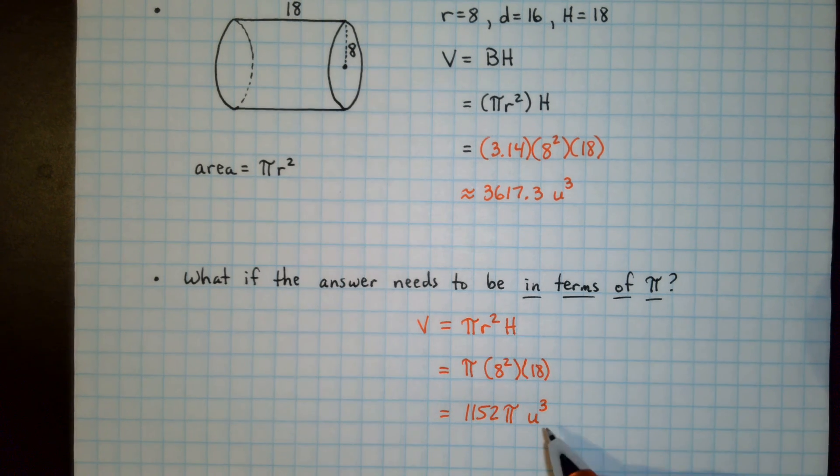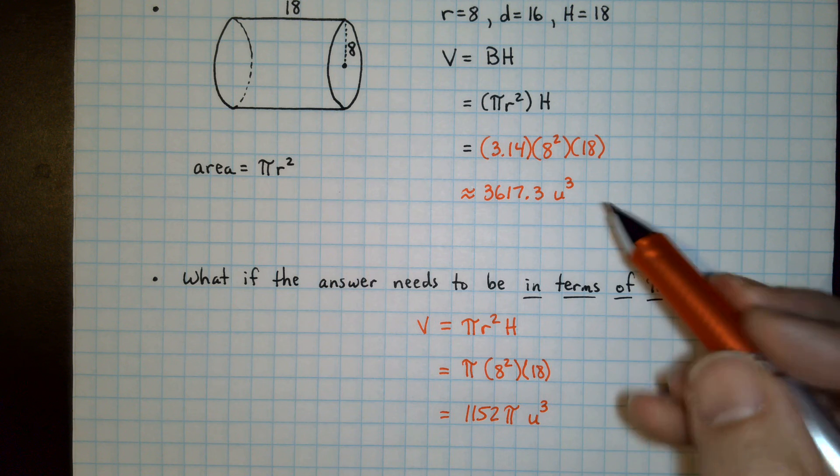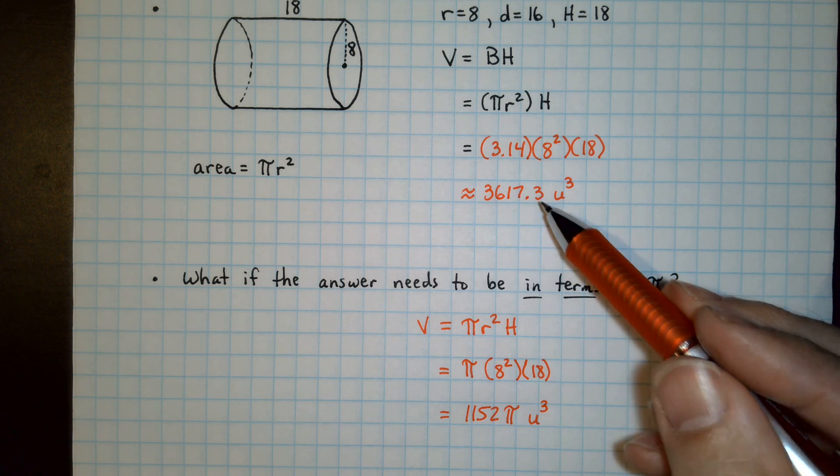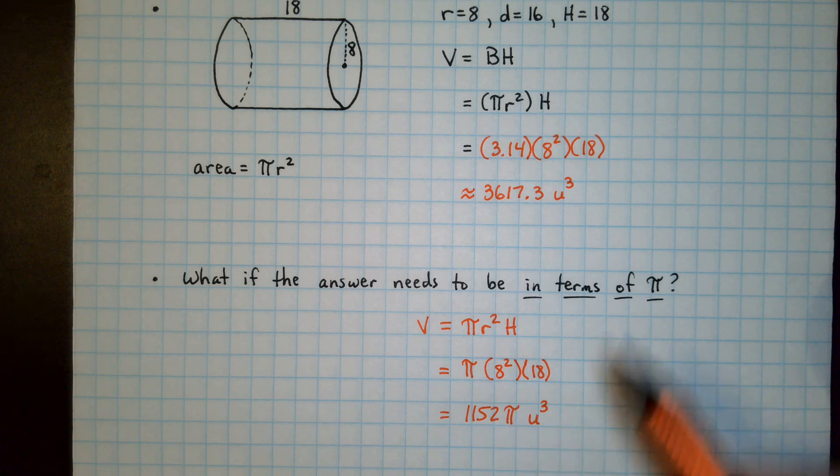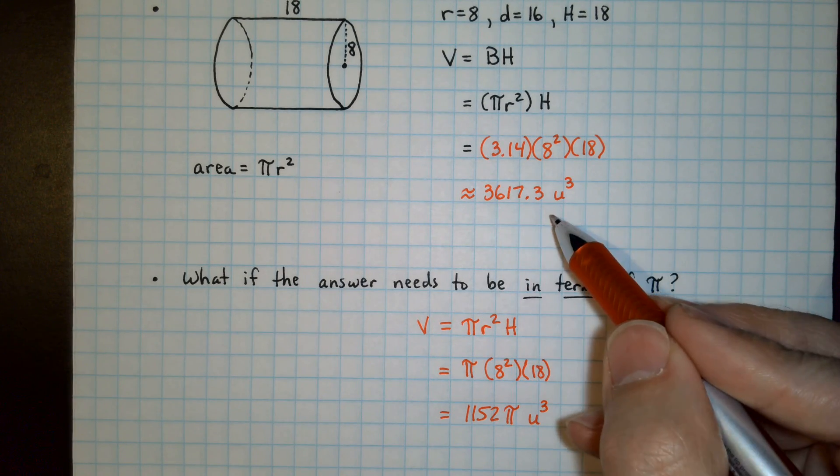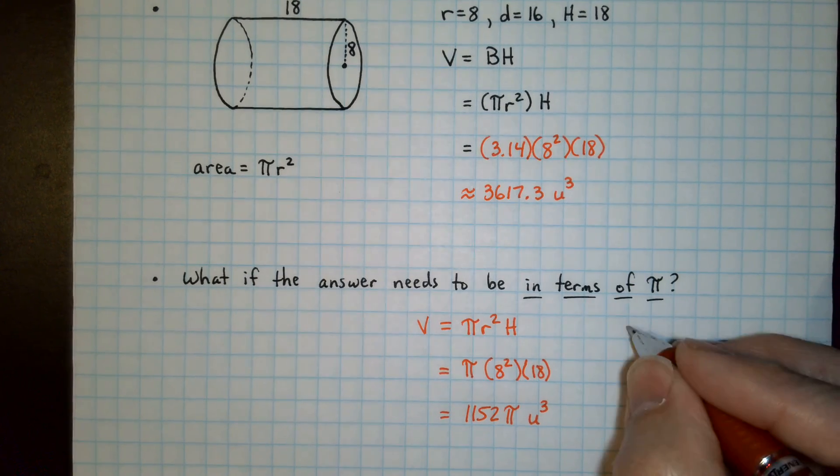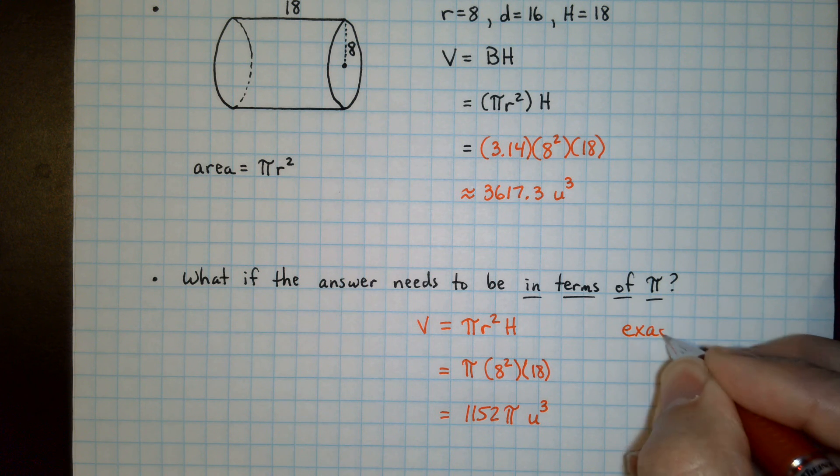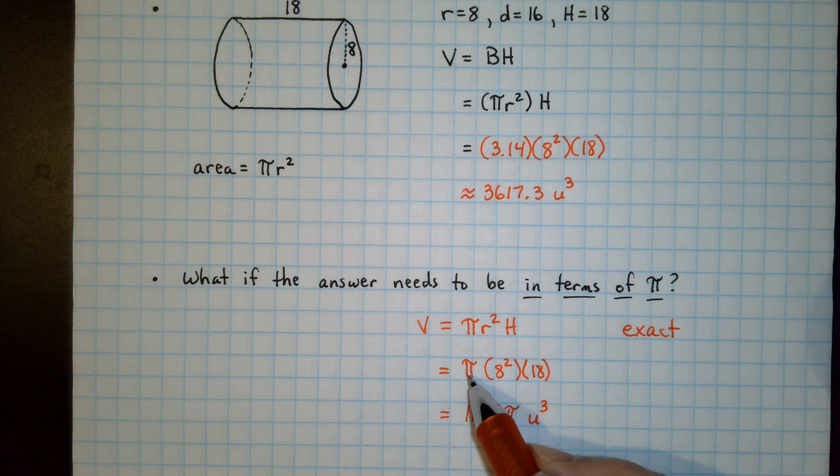And this is now the volume in terms of pi. These values are the same. One leaves it in terms of pi. One of them gives you a full decimal answer. Sometimes this is referred to as exact because we did not use an approximated value of pi. See you next time.